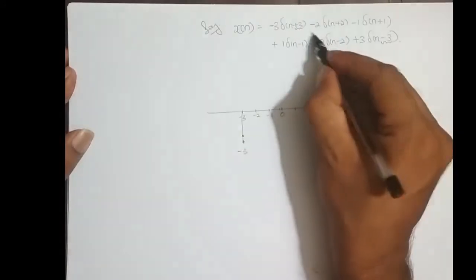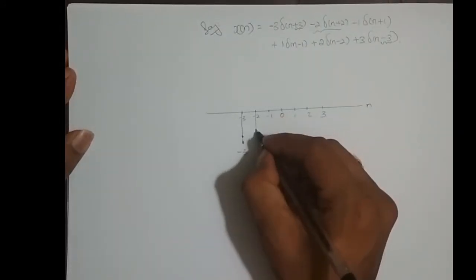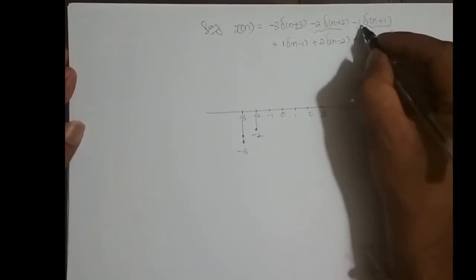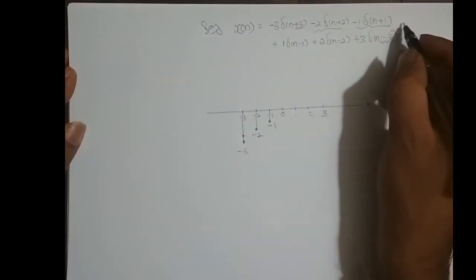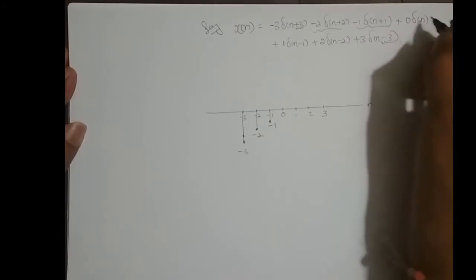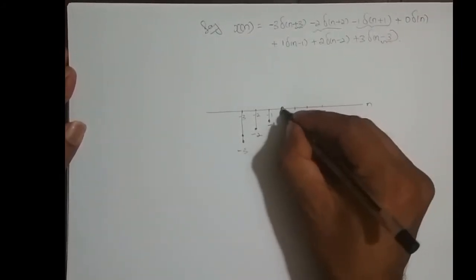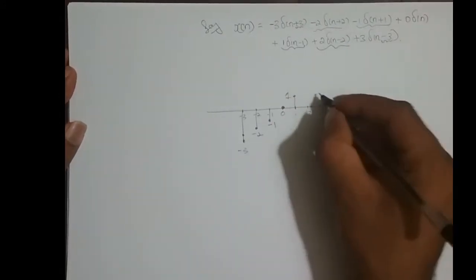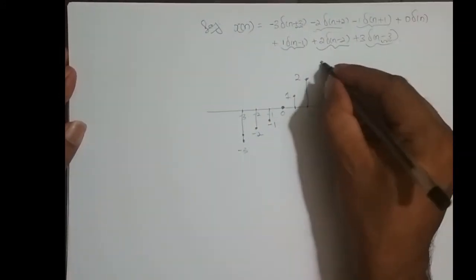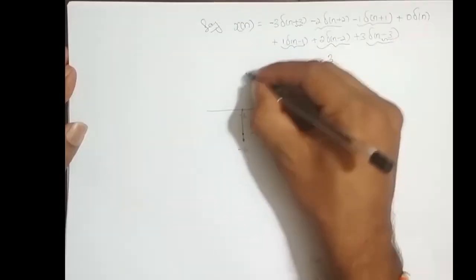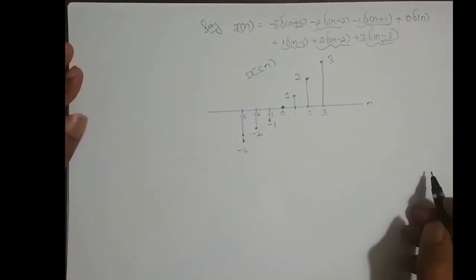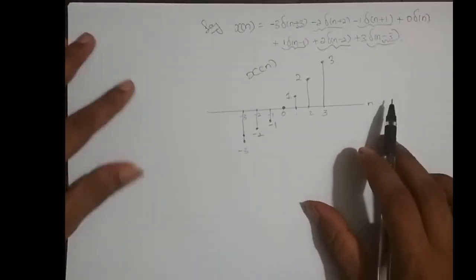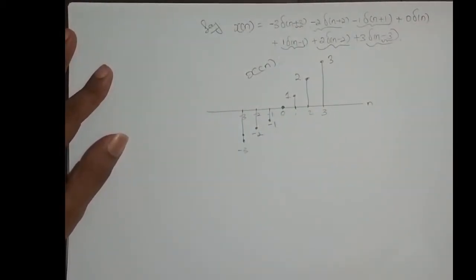Delta(n) shifted left 3 times and amplitude scaled by minus 3, so it is minus 3. This part is delta(n) shifted left 2 times, amplitude scaled by minus 2. This part is delta(n) shifted left 1 time, amplitude scaled by minus 1. There is no delta(n) term — I can write it as 0 times delta(n), which is the same as writing nothing, so there is no sample at n equal to 0. Delta(n) shifted right 1 time, amplitude scaled by 1. Delta(n) shifted right 2 times, amplitude scaled by 2. Delta(n) shifted right 3 times, amplitude scaled by 3. You add up all these individual shifted and scaled versions of the impulse function to get your discrete time signal back.